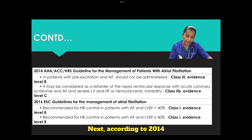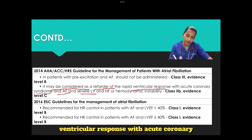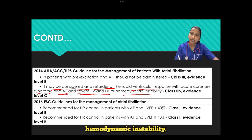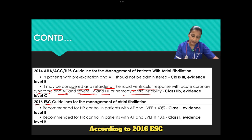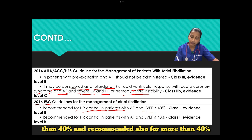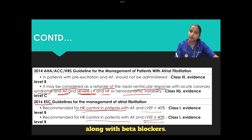According to 2014 AHA, digoxin may be considered as a retarder of rapid ventricular response with acute coronary syndrome and AF with severe LV dysfunction, heart failure, or hemodynamic instability. According to 2016 ESC, it was recommended for heart rate control in patients with EF with LV dysfunction less than 40%, and also for EF more than 40% along with beta blockers.